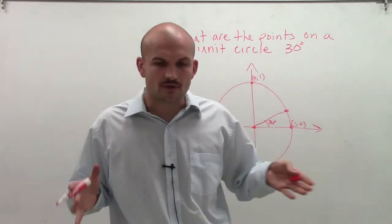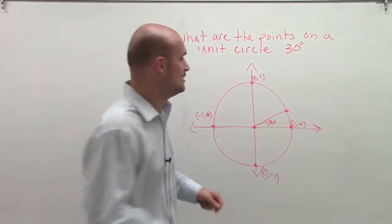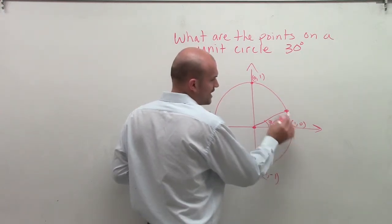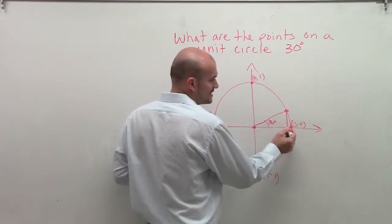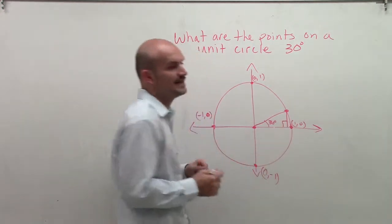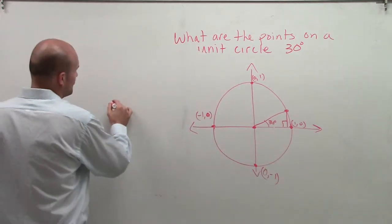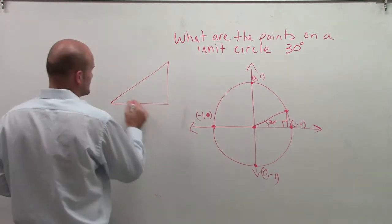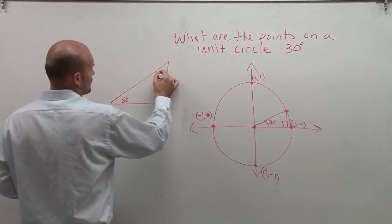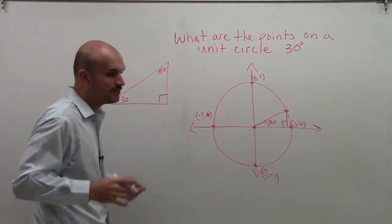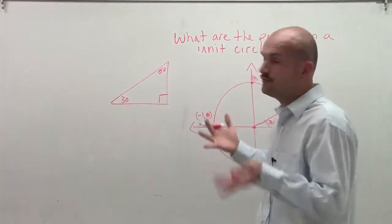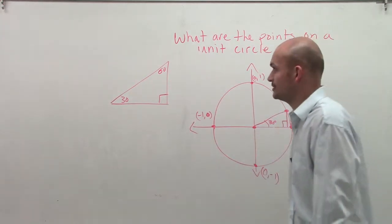So to do that, one thing we notice is if I draw a perpendicular line from my point on the unit circle down to the x-axis, I can create a 90 degree triangle. Therefore, what I've just created now is what we call a 30-60-90 triangle. And that's going to be a little bit of definition, if you remember from your geometry days. Hopefully, you studied a little bit of 30-60-90 triangles.